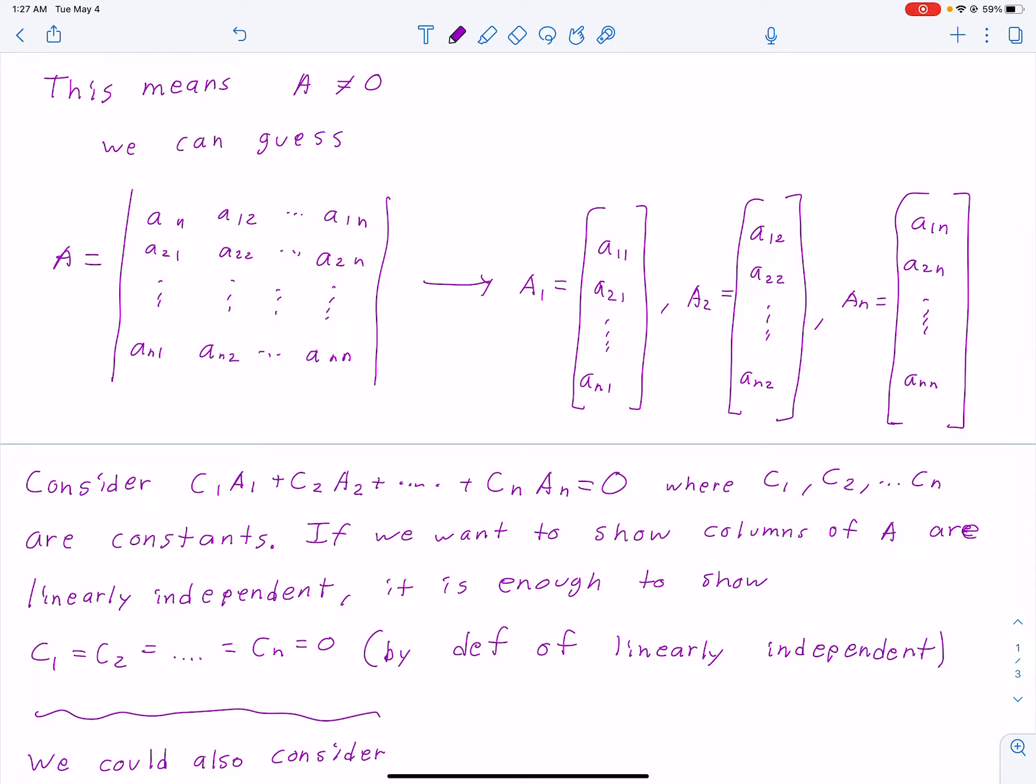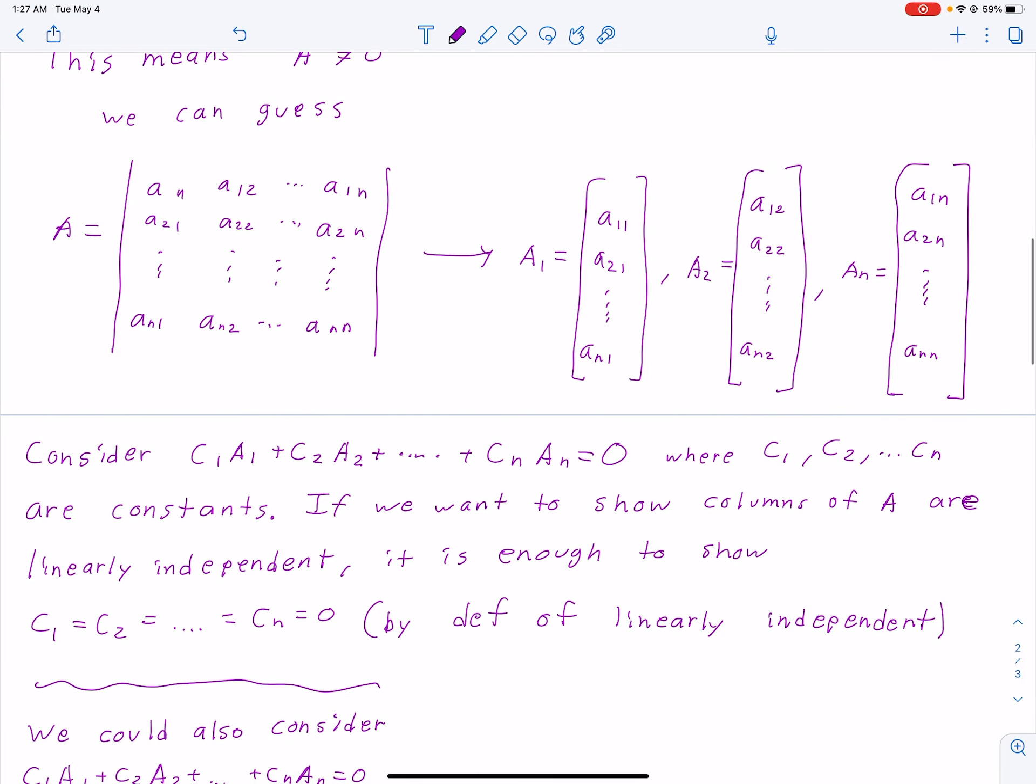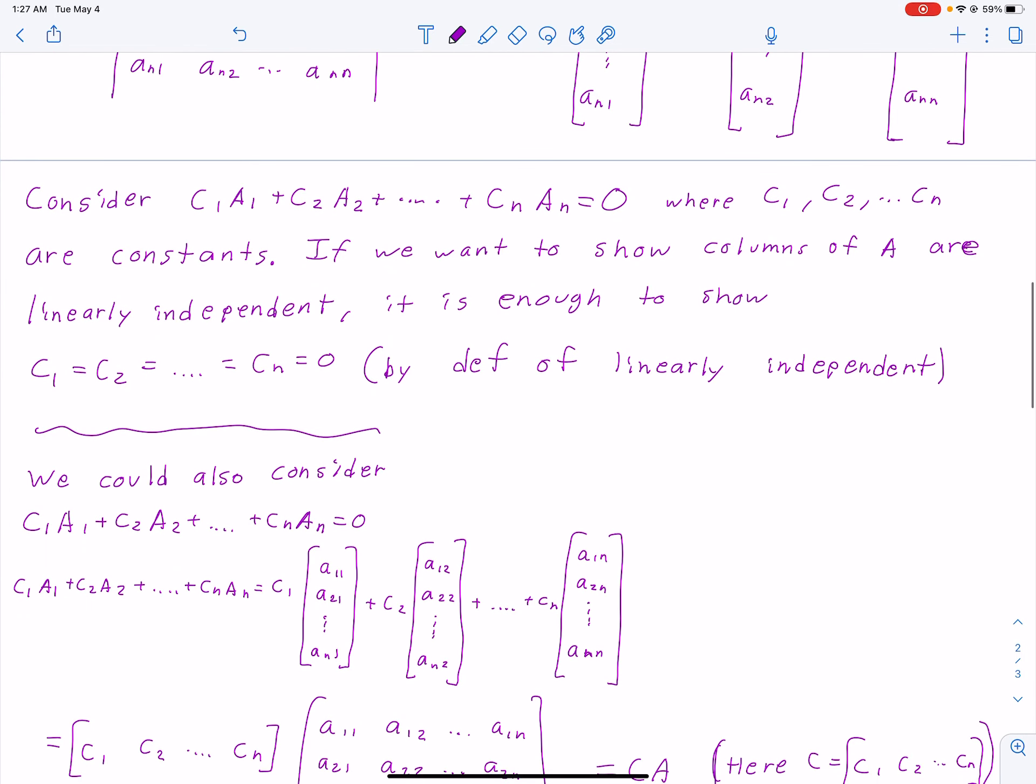You can transfer it to the vectors, whether they're separate things. We can also consider the setup in equation form when there are constants. If we want to show columns of A are linearly independent, it is enough to show a summarized version of it. We can prove this by the definition of being linearly independent.